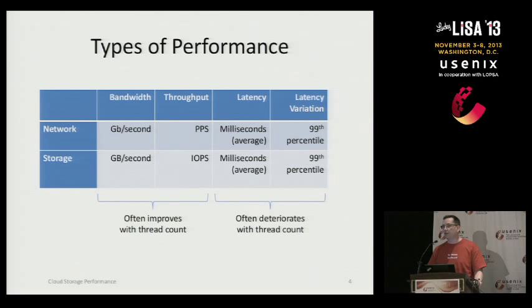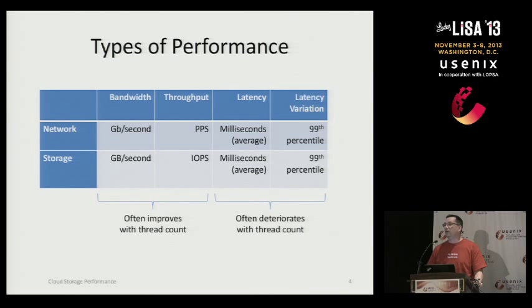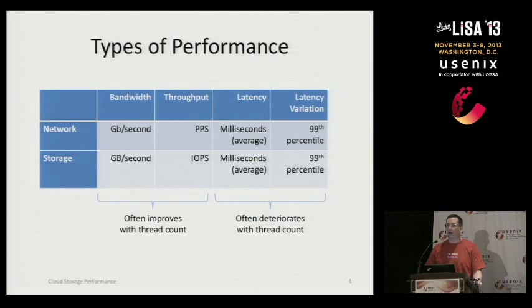In approximate order of usefulness in predicting your actual behavior as the user or app is going to care about it, we can go from the very simplest measurement, which is bandwidth — megabytes or gigabytes per second. It's the easiest to measure generally, and also generally the least informative and the least likely to be a problem on a lot of systems. In distributed file systems, just about any of them can readily saturate the media in terms of gigabytes per second. It's just not the hard problem.